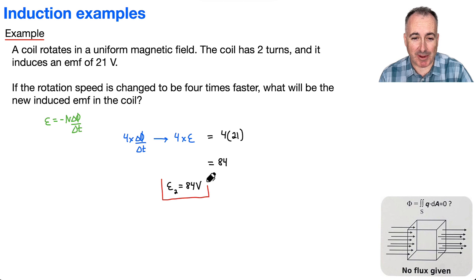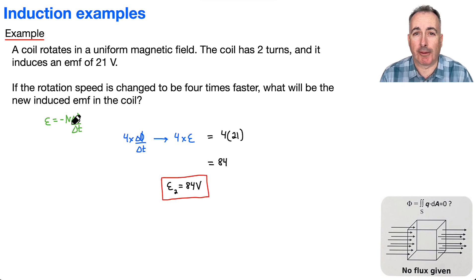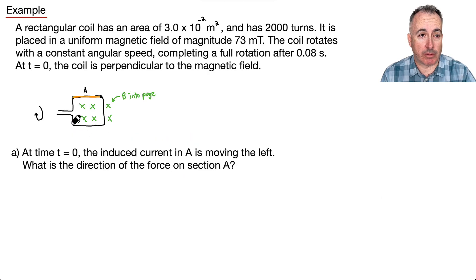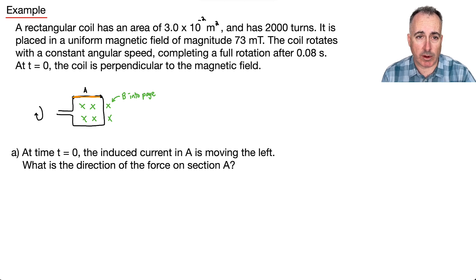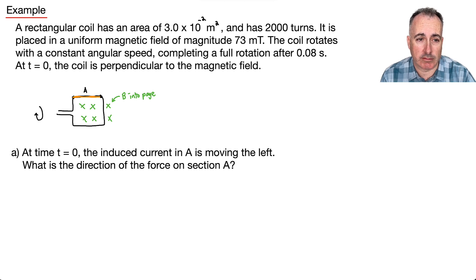That wasn't so bad — you just had to think about Faraday's Law. So here we have another example. We've got a rectangular coil with an area of 3×10⁻² meters squared, so that means it's 0.03, and has 2,000 turns — a coil with lots and lots of turns.